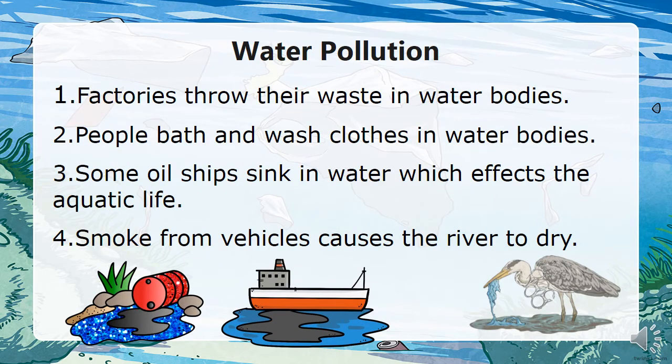Now let us look at the third form of pollution. Previously we covered land pollution and air pollution. Now we are going to look at water pollution. Factories throw their waste into water bodies. People bathe and wash clothes in water bodies. Some oil ships sink in water, which affects aquatic life. Smoke from vehicles also causes rivers to dry up.